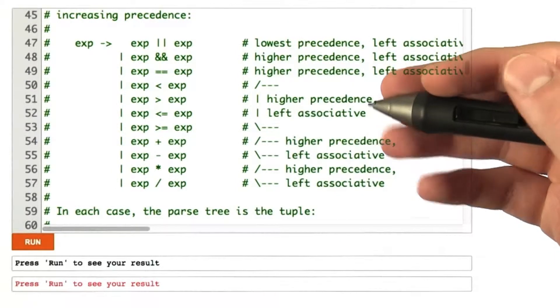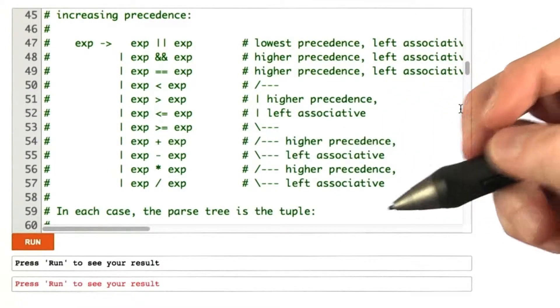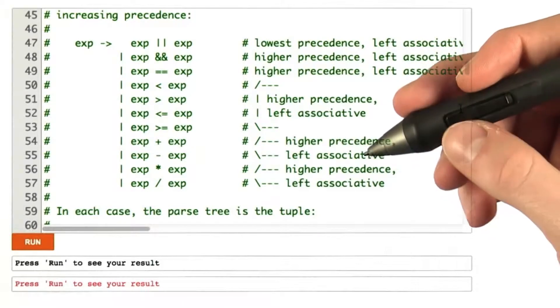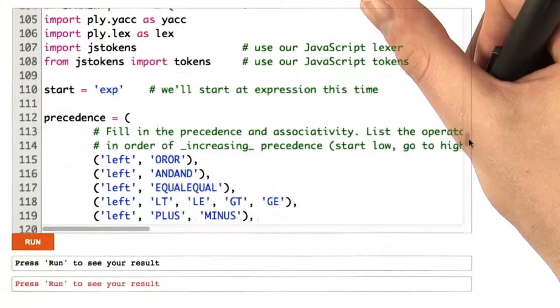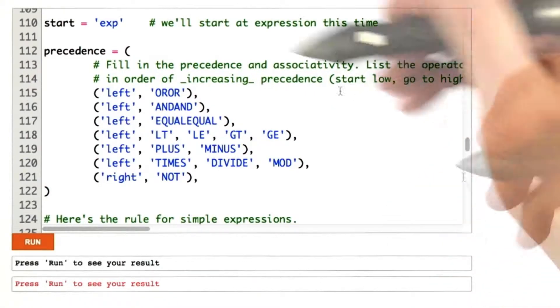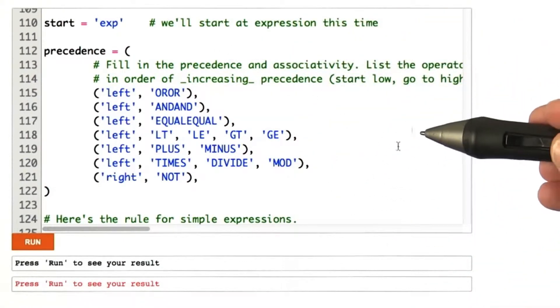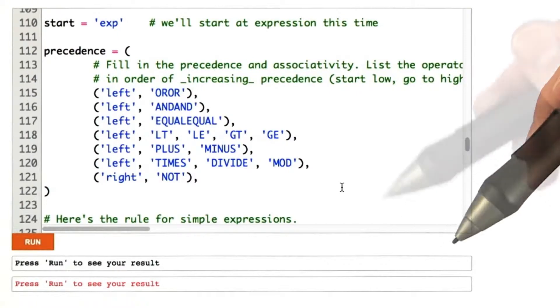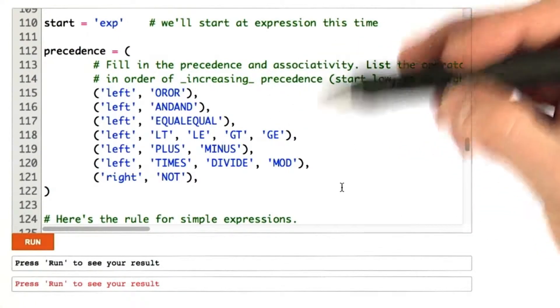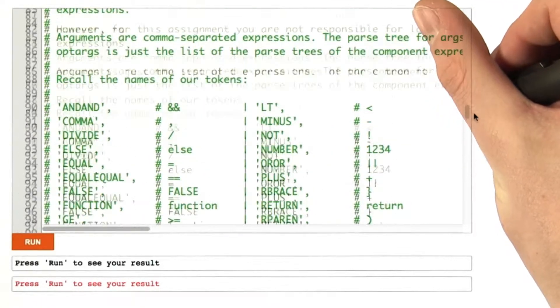We're also given an enumeration of the precedence and the associativity for each of these operations. So really, we have everything we need in the problem description to do this problem. And as you can see here, I've already filled in the precedence ordering for the operations.